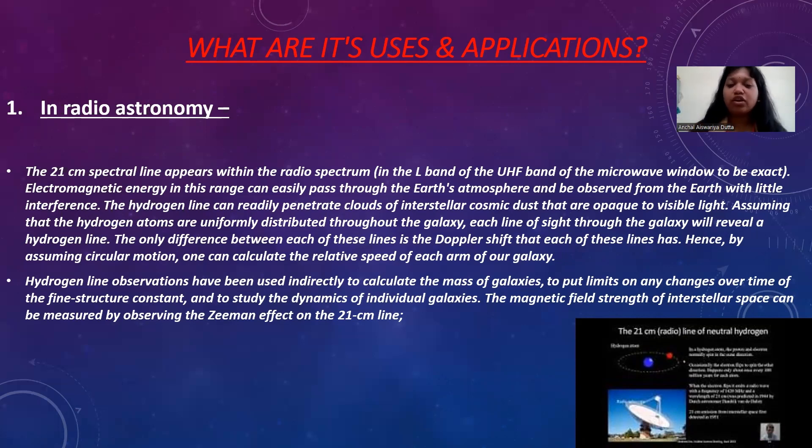You can think how big it is, or to put limits on changes over time of the fine structure constant, like the 137, and to study the dynamics of individual galaxies. Also, the magnetic field strength of interstellar space can be measured by observing the Zeeman effect on the 21 cm line.